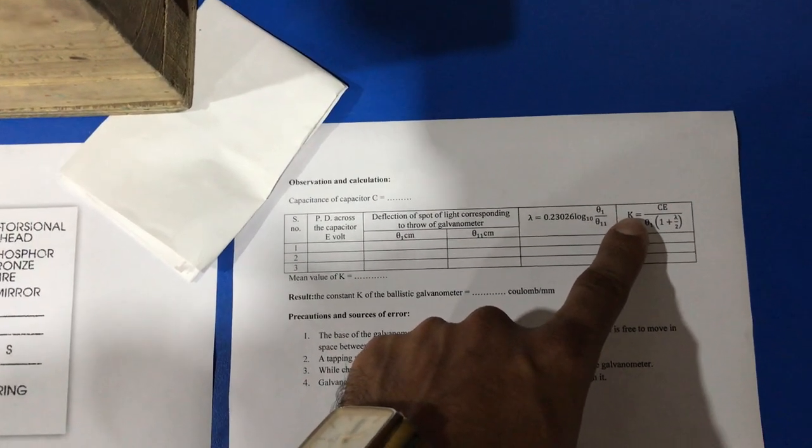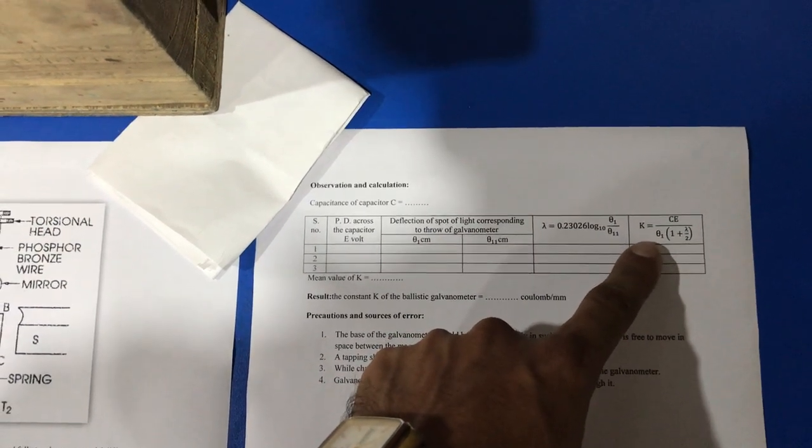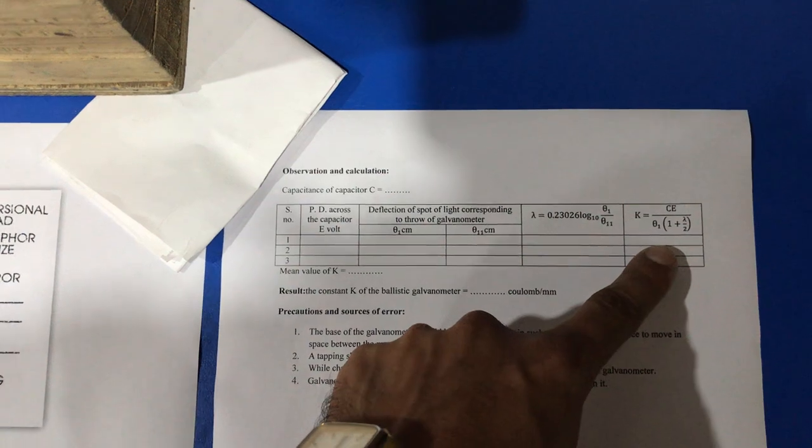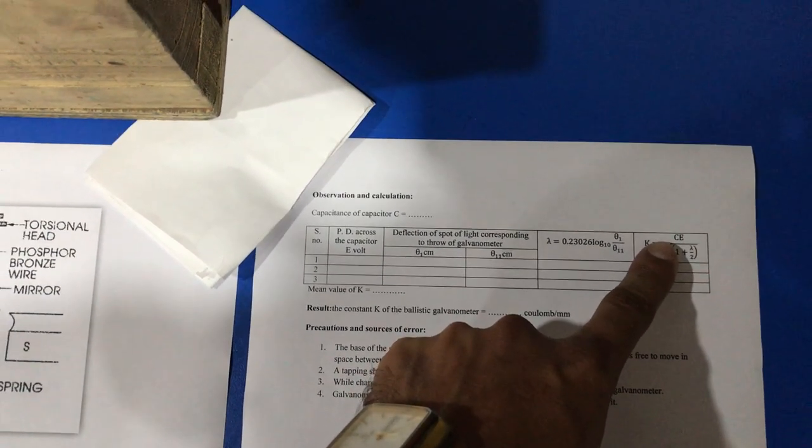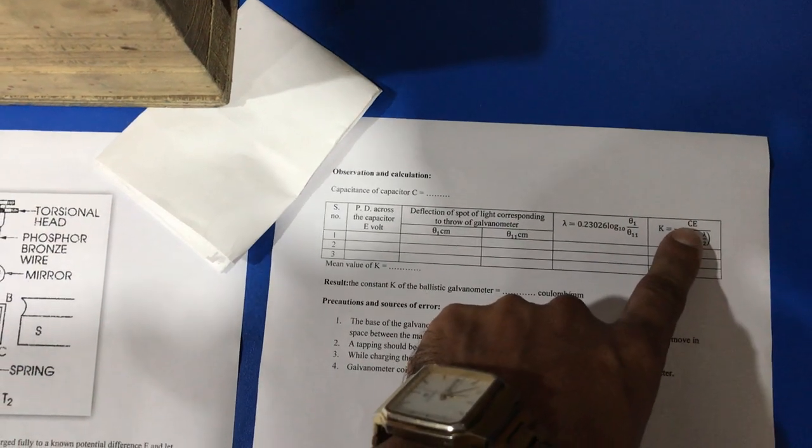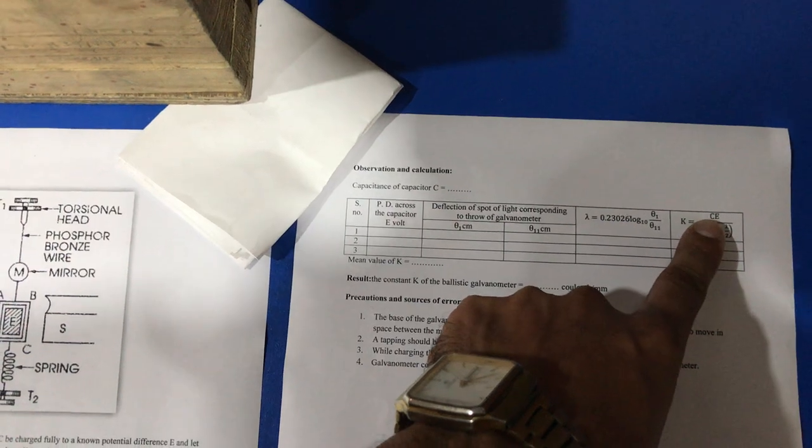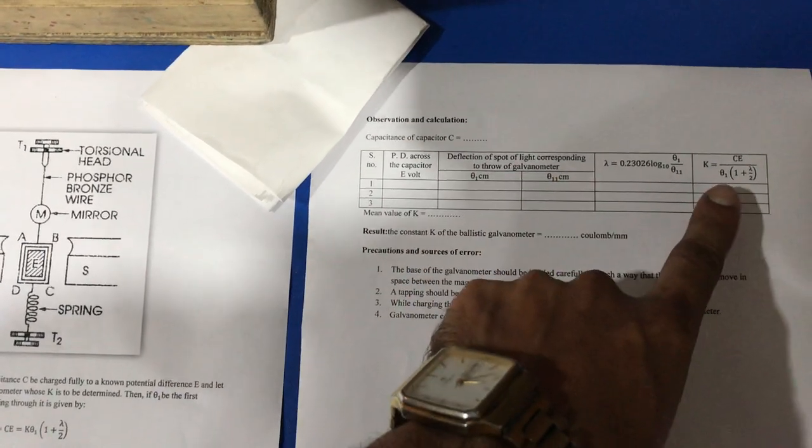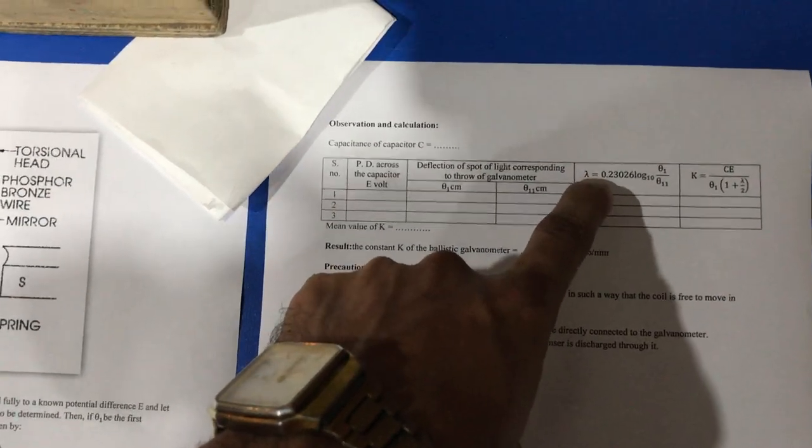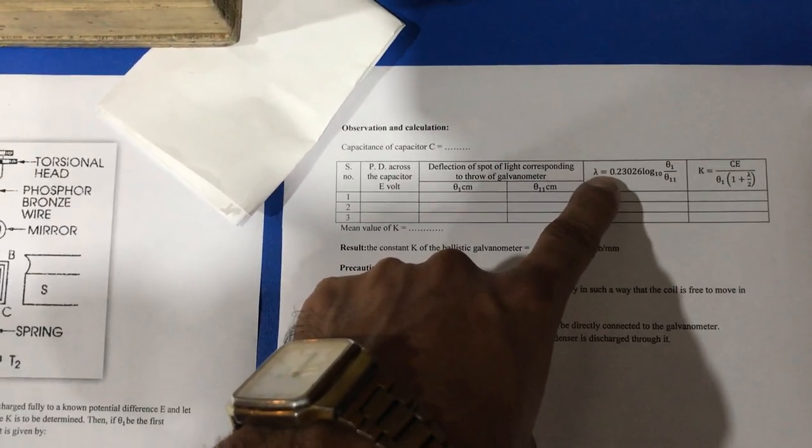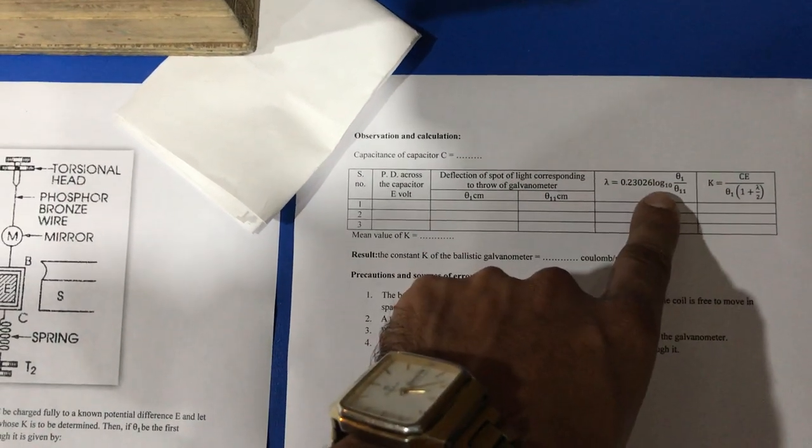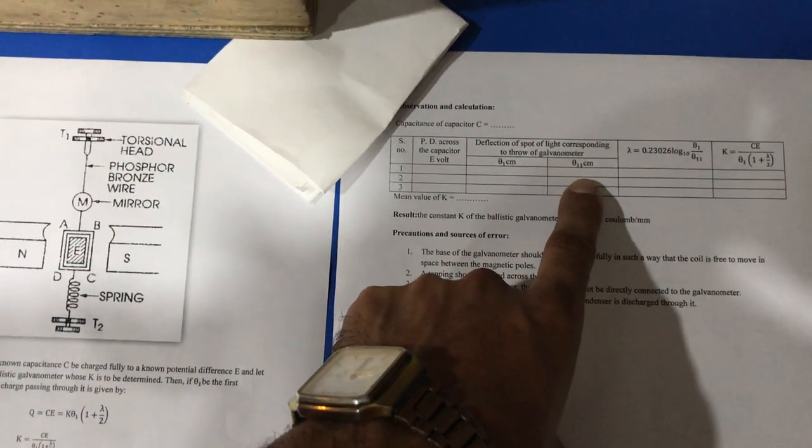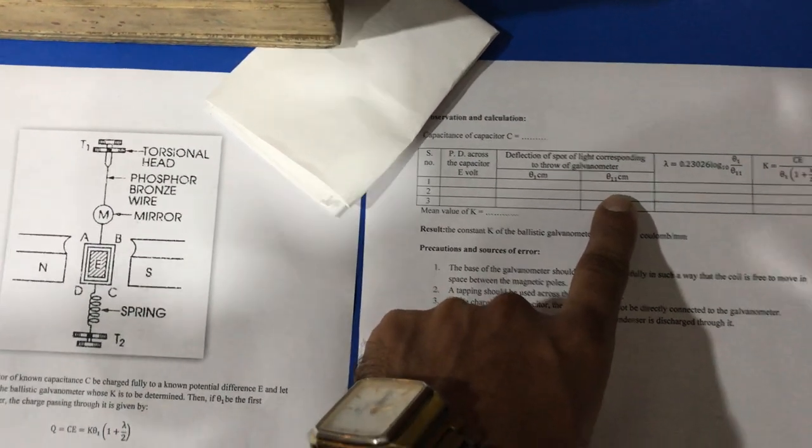We use the formula: K equals C times E times theta 1,1, times (1 plus lambda by 2). Here C is the value of standard capacitance, E is the value of voltage applied through the battery eliminator, theta 1,1 is the deflection, and lambda equals 2.303 times log 10 of theta 1 divided by theta 11. Here theta 11 is the deflection of the 11th throw. Thank you very much.